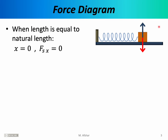To better understand Hooke's Law, let's examine the forces that act on the block when it is attached to a spring. First, let's consider the case where the spring is at its natural length — not stretched and not compressed. In that case, x in Hooke's Law is going to be 0. Remember, x is not the length of the spring, but rather how much the length of the spring has changed compared to its natural length. If x is 0, then the spring force is also 0. The only two forces acting on the block are gravity pulling straight down and the normal force pushing up. The normal force and weight balance each other out.